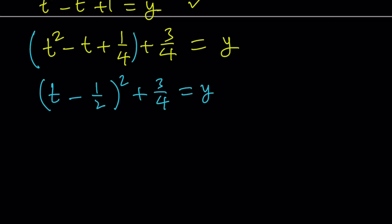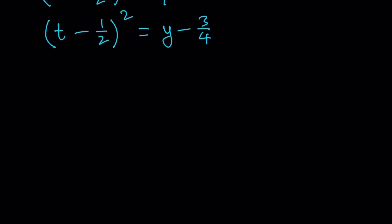Now we're going to go ahead and subtract 3 fourths and then square root both sides. But notice we're going to get two results from square rooting using the absolute value. So I'm going to write it as t minus 1 half equals plus or minus the square root of y minus 3 fourths. Let's go ahead and add 1 half to both sides so that we can get t by itself: t equals 1 half plus or minus the square root of y minus 3 fourths.